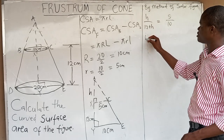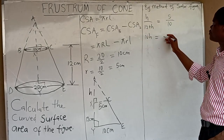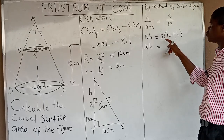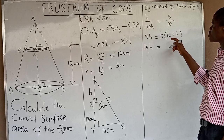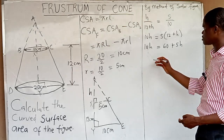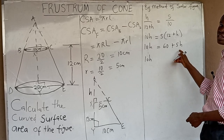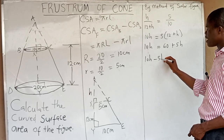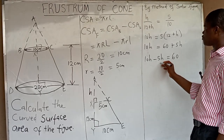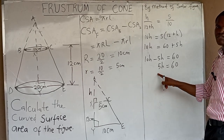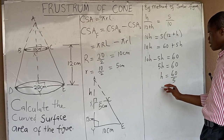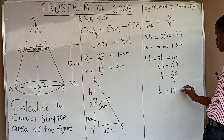Cross-multiplying: 10H = 5 × (12 + H). Expanding the bracket: 10H = 60 + 5H. Collecting like terms: 10H − 5H = 60, so 5H = 60. Dividing both sides by 5, H = 60 ÷ 5 = 12 centimeters.